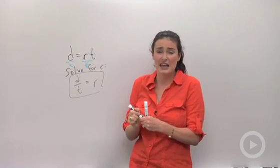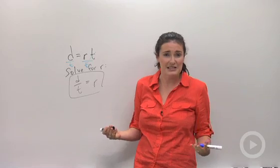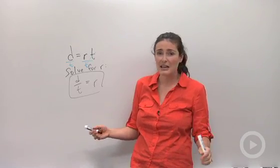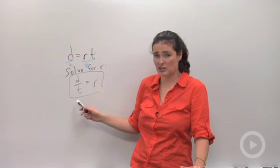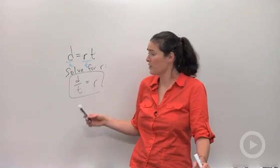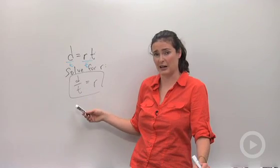This is useful because if you were asked to find out how fast somebody was going, what's their rate, and you knew their distance and how long it took them to get there, you could solve this equation for R. You could find R. R is equal to distance divided by time.